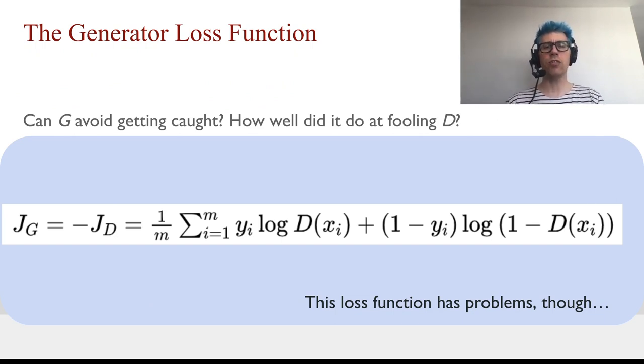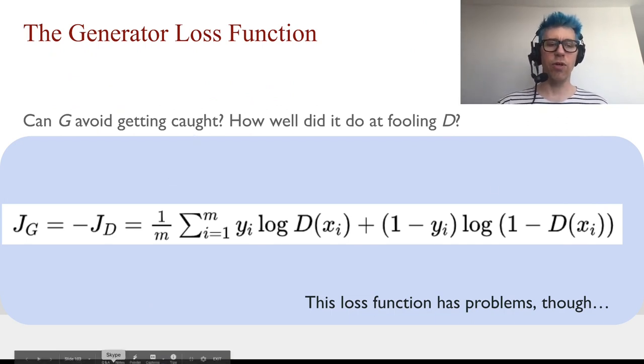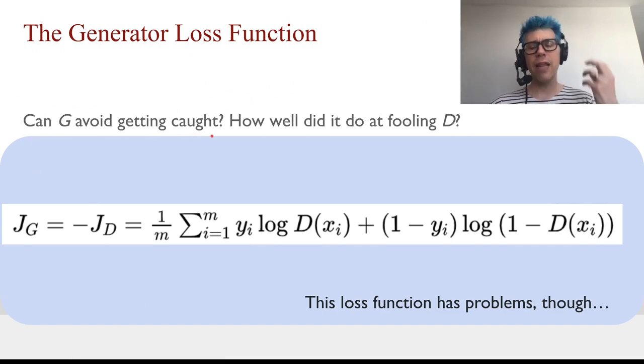Now what's the generator trying to do? The generator is trying to minimize the probability of being caught. In other words, the generator wants to produce images such that the discriminator, when it thinks it's a real image, it's actually a fake image, and vice versa.